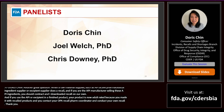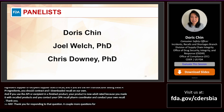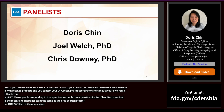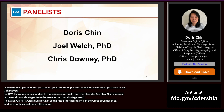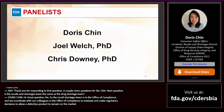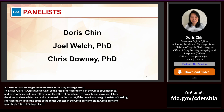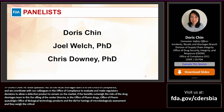Next question for Ms. Chen: is the recalls and shortages team the same as the drug shortage team? No. The recalls and shortages team is in the Office of Compliance and coordinates with colleagues in the Office of Compliance to evaluate and make regulatory decisions on allowing a defective product to remain on the market if benefits outweigh risks. The drug shortages team is in the Office of the Center Director and works with other groups such as the Office of New Drugs, Office of Pharmaceutical Quality, Office of Biotechnology Products, and Division of Microbiology Assessment to evaluate the safety and clinical impact of the defective product.